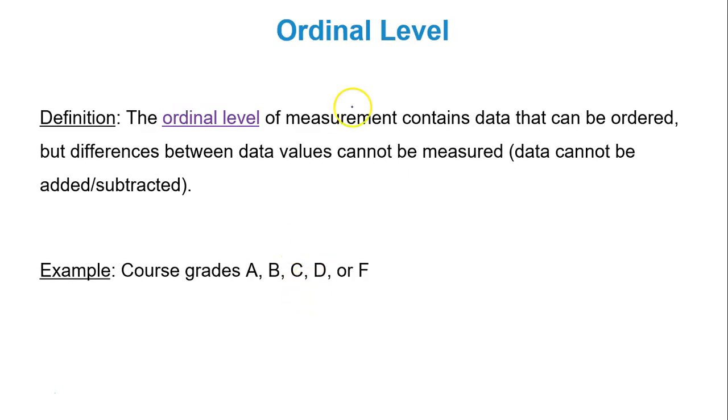Ordinal means data can be ordered. Not only can it be ordered, but the order has significance to it. Differences between data values cannot be measured, so you can't subtract the data values. There's no meaning there. So what this means is if you had course grades of A, B, C, D, or F, you could label those, but you can't subtract them. That doesn't make any sort of sense. So this is an example of ordinal data. You can order the data. It makes sense. You could also order it from F, D, C, B, or A also.